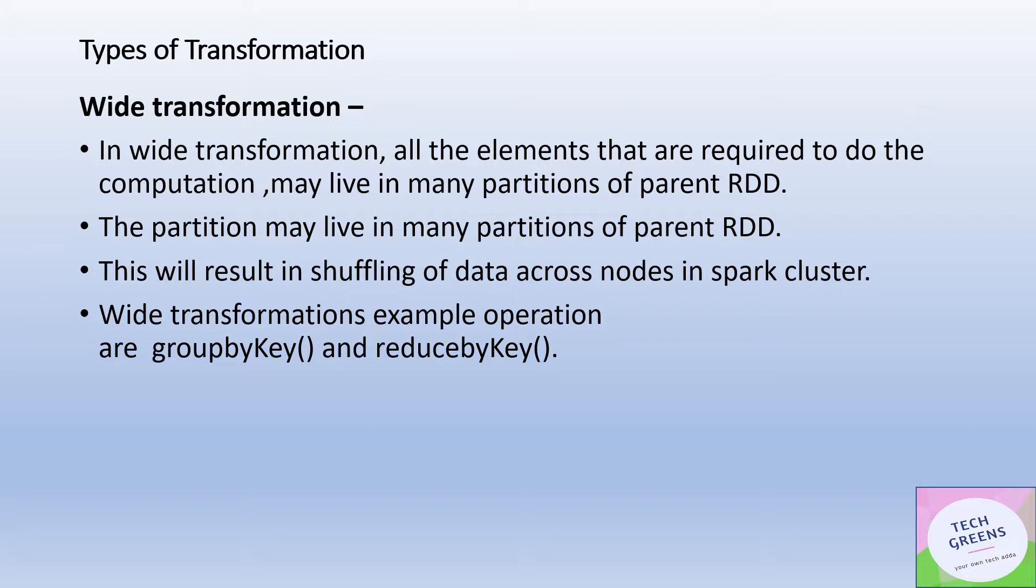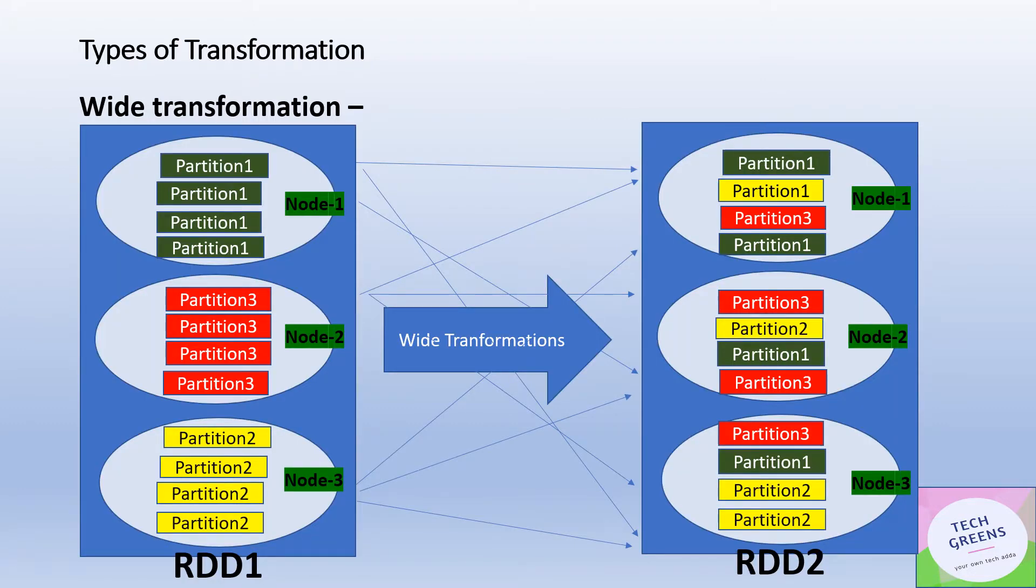Let's try to understand wide transformation with this diagram. Similarly here we have two RDDs: RDD1 which is input to the transformation and RDD2 is the output. We have three nodes carrying their partitions - partition 1 in node 1, partition 2 in node 3, and partition 3 in node 2. But when we apply the wide transformation, the partitions get shuffled across different nodes. Now partitions 3 and 2 are also residing on nodes 1, 2, and 3, while initially they were grouped together as a single partition data on one node. Let's try to understand it with an example.